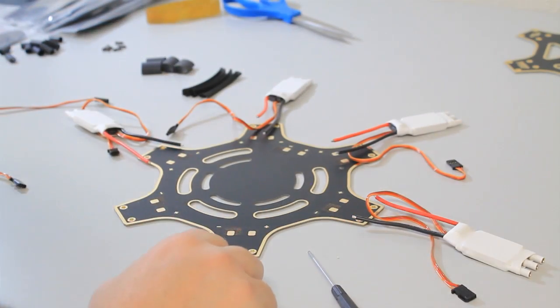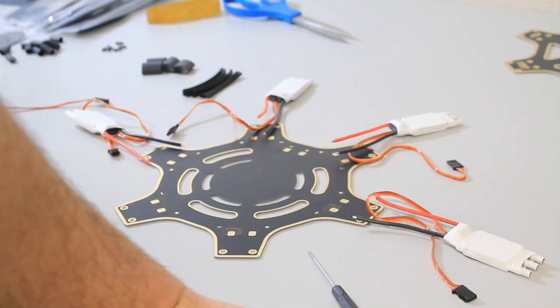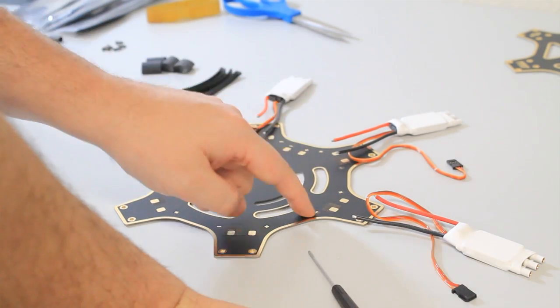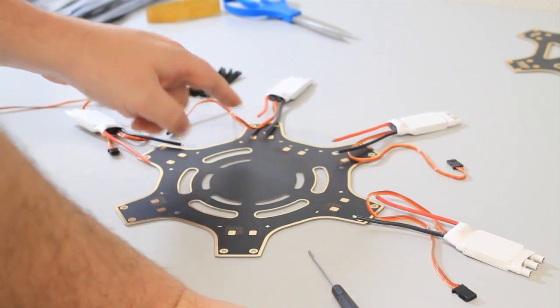Okay, now we got the bottom power distribution board, the bottom frame piece. Just have it kind of laid out to give you an idea. It's pretty simple on how it goes. Plus goes to red, minus goes to black, and it goes all the way around.